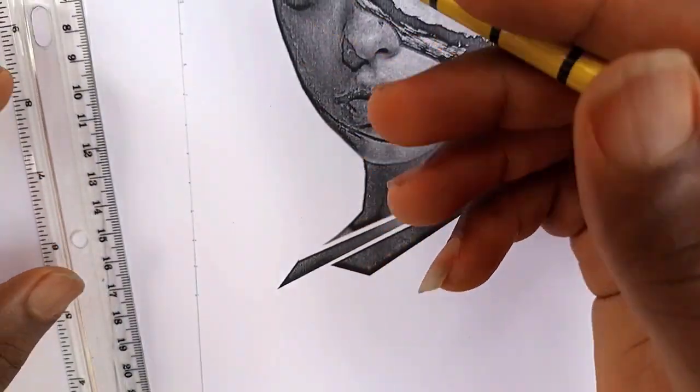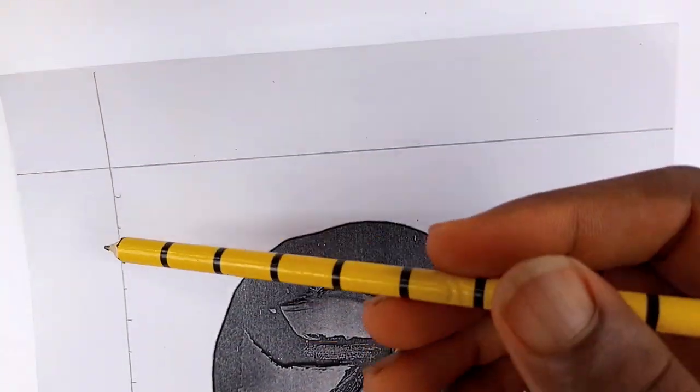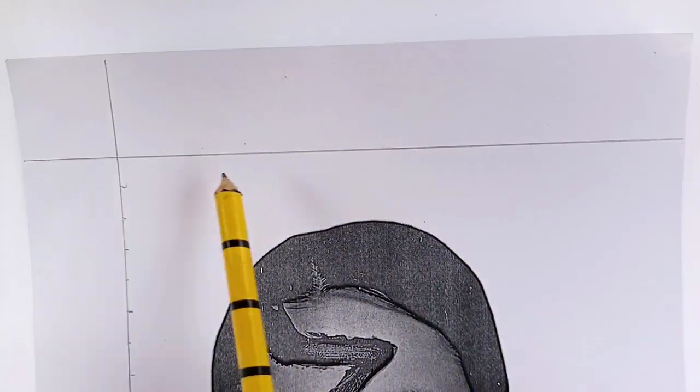So notice how I started counting from this top corner down. Now I'm going to start counting from this side to this side.